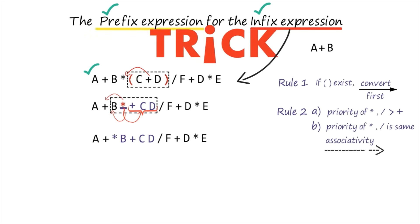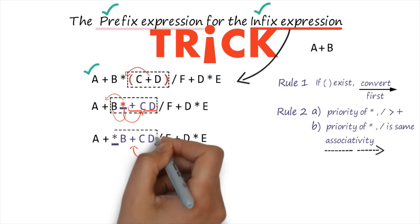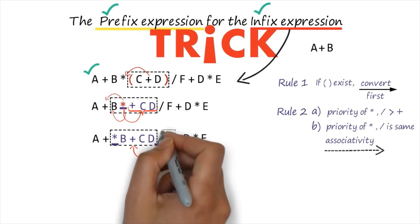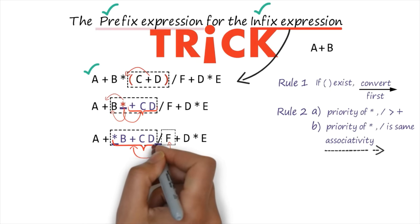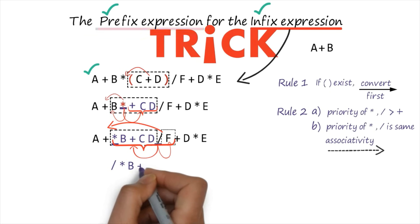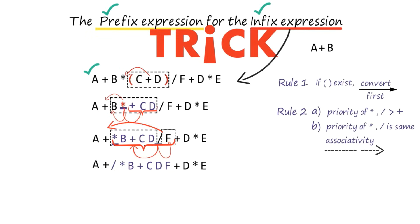Everything else remains as it is. Since our associativity is left to right, after processing the star, the next symbol is the slash — the division sign. This is the left part of the division sign and this is the right part. Since everything is converted as a whole, we have the left operand and the right operand of the division sign. We drag this symbol accordingly, so it becomes: slash, then star b plus cd, then f; and a plus plus d star e remains as it is.